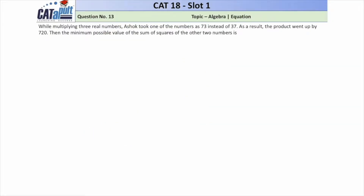Hello everyone. This is question number 13 from CAT 2018 Slot 1. This question is from algebra and falls under the equations category. The question says: when multiplying 3 real numbers, Ashok took one of the numbers as 73 instead of 37. As a result, the product went up by 720. Find the minimum possible value of the sum of squares of the other two numbers.